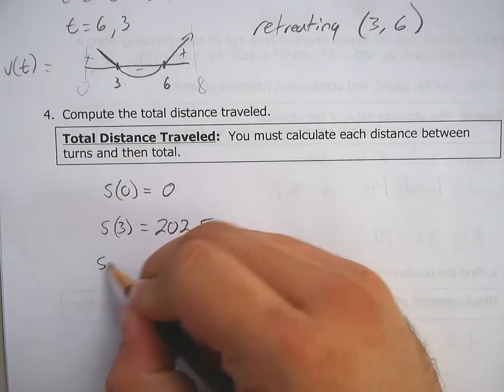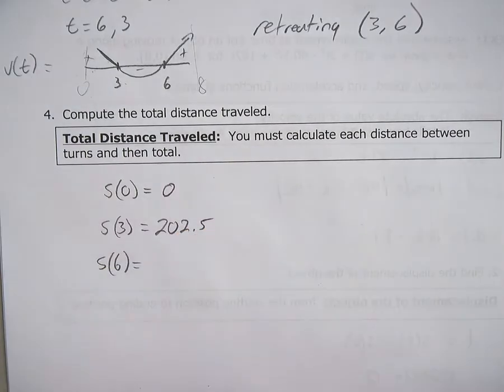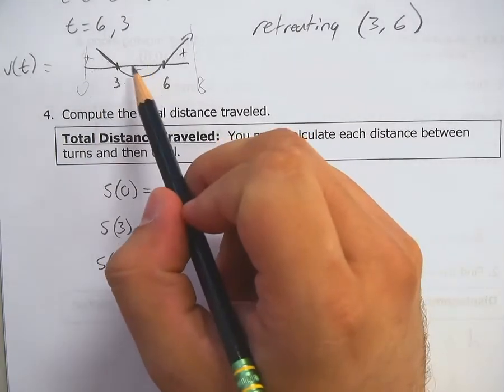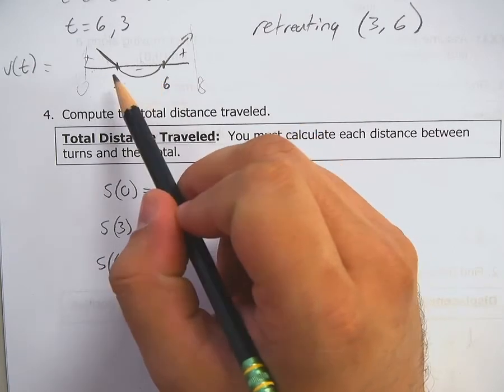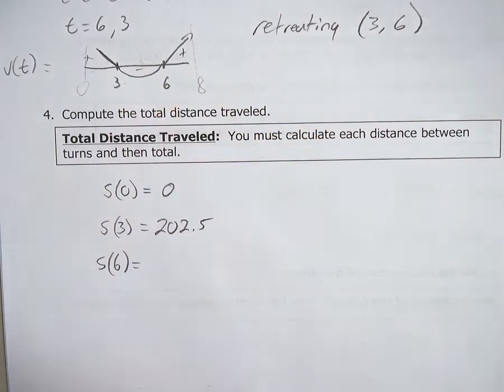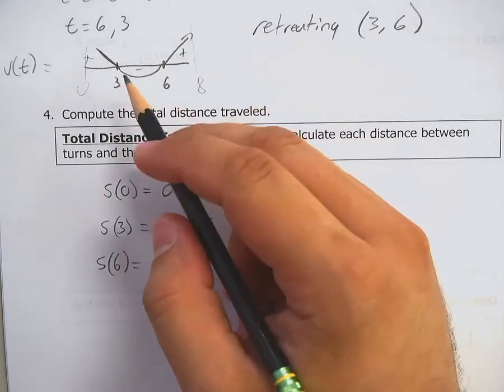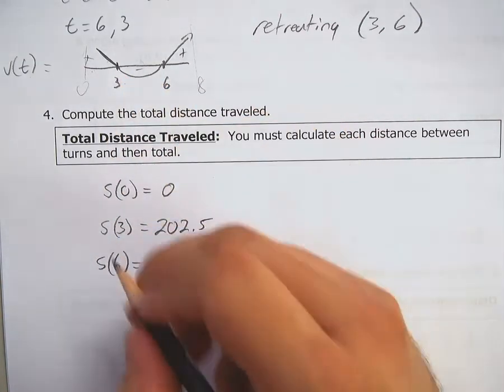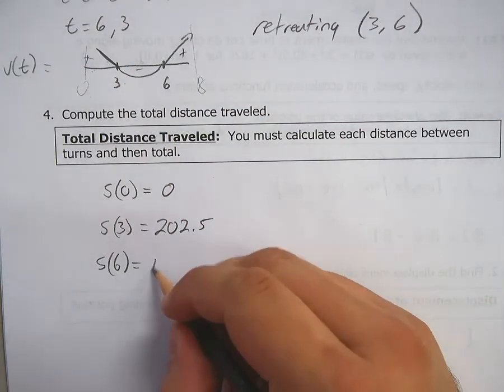And then you go to S of 6. Now, let me explain something about S of 6. You're going backwards here, right? You're actually reversing where you're going. It's kind of like coming back to where you started, except you're not going the whole way. So from 3 to 6, we need to find S of 6. Plug that in. You get 162.